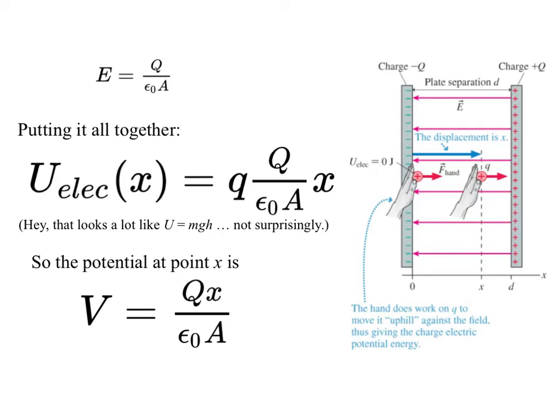As an aside, that looks a lot like U equals MGH. Notice that we have the charge and then some sort of field strength and then some sort of distance from a reference point. Not surprisingly, the parallel plate capacitor, in general, since it gives us the constant electric field, will look a lot like a gravitational situation.